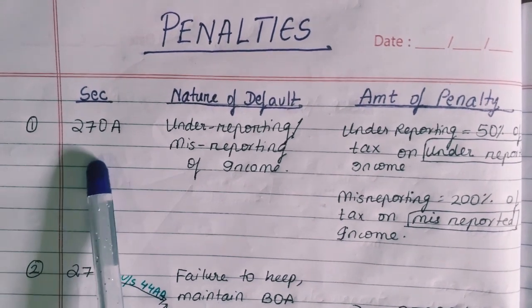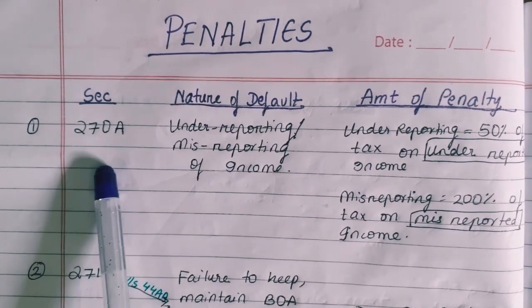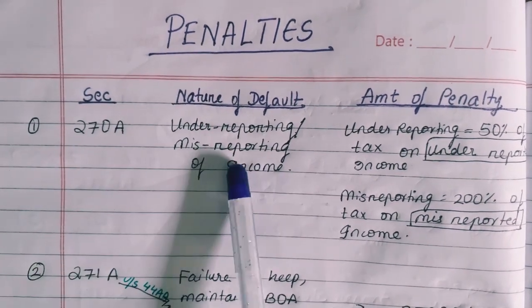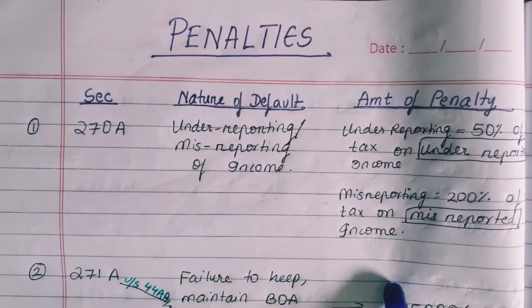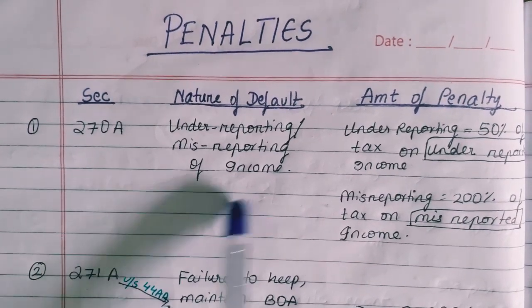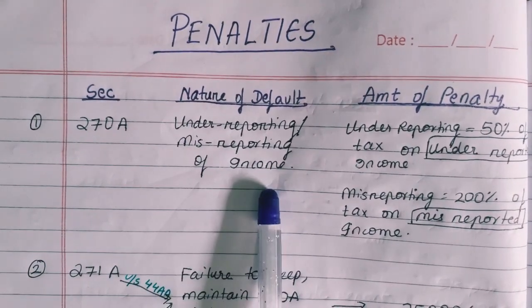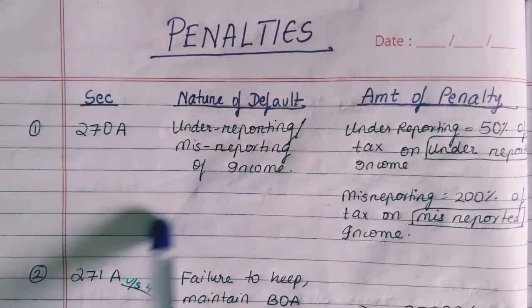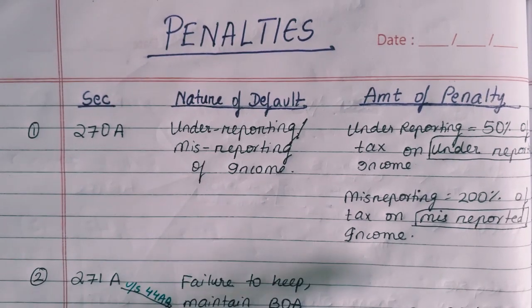The first and most important section is 270A. This section deals with under-reporting and misreporting of income — these mean penalties. If you don't have time for anything else, this section 270A is the most important one.